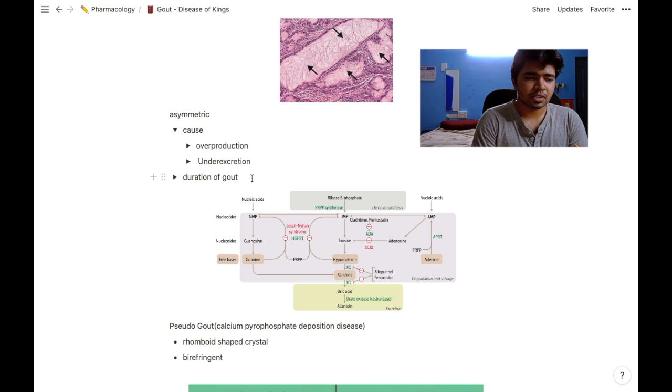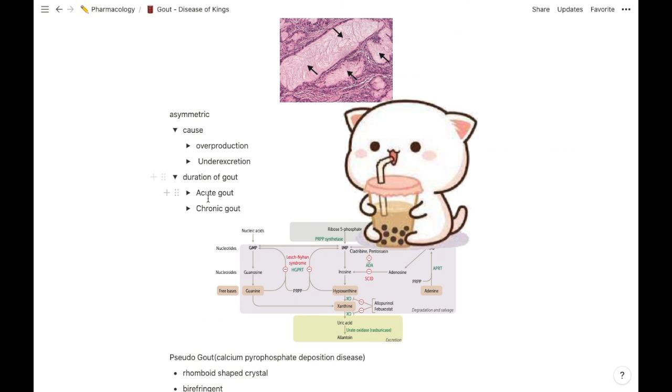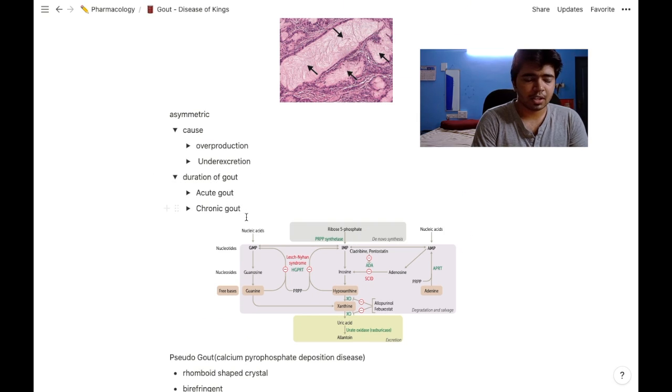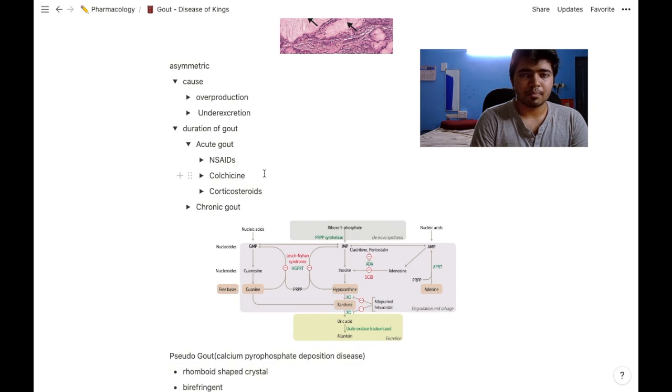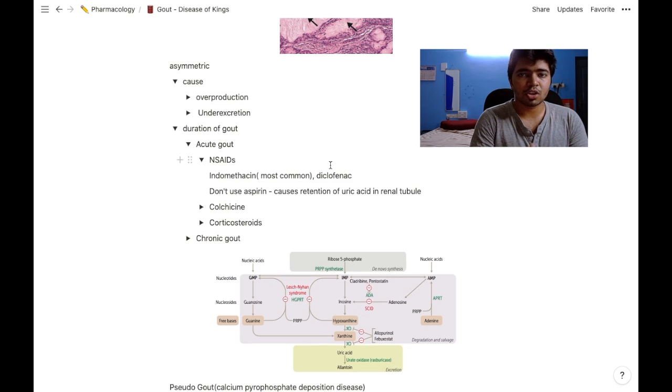Gout can be classified based on the duration in which it is present—it might be acute or chronic. Acute gout can be treated by mainly three drugs: nonsteroidal anti-inflammatory drugs, colchicine, and corticosteroids.